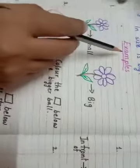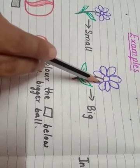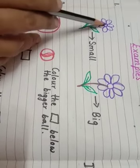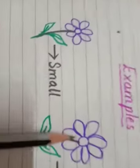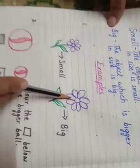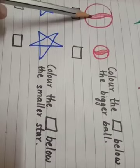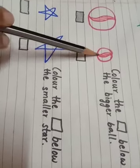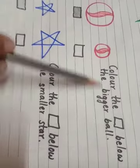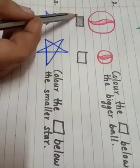Small flower, big flower. See the size of the flower here, small. Size of the flower is big. Now here, big ball, small ball. Color the box below the bigger ball. Which is the bigger ball here? Yes, this. So you have to color it.